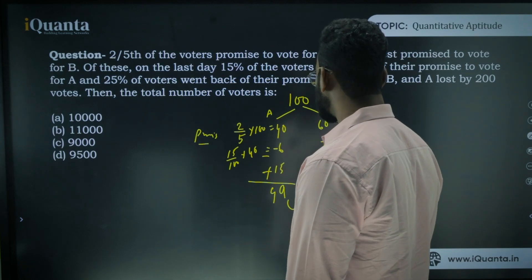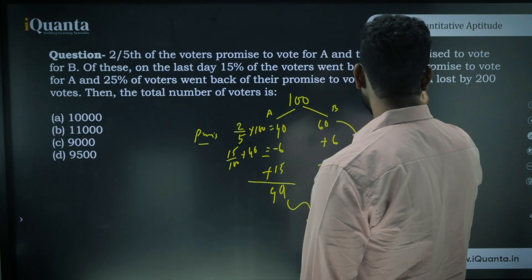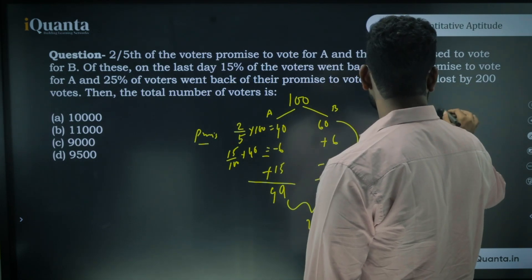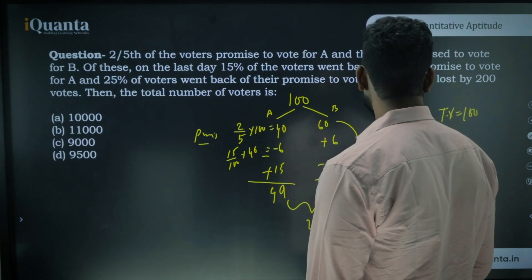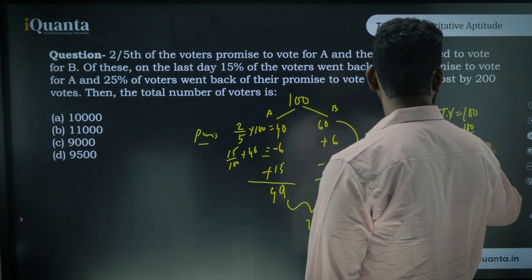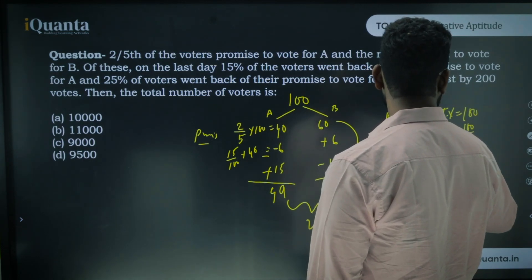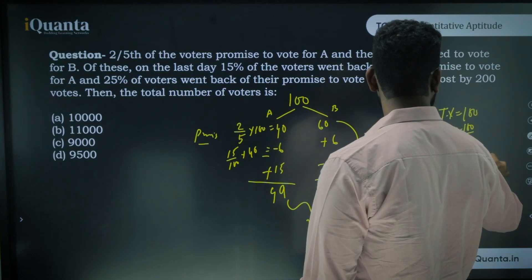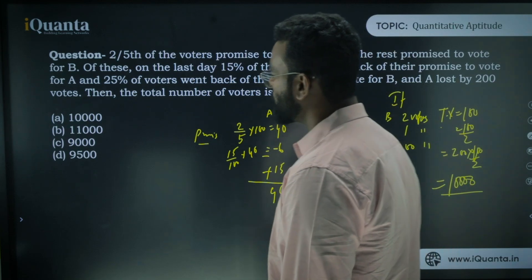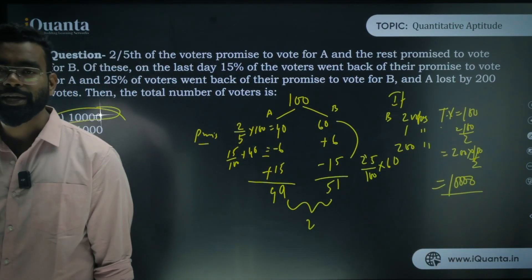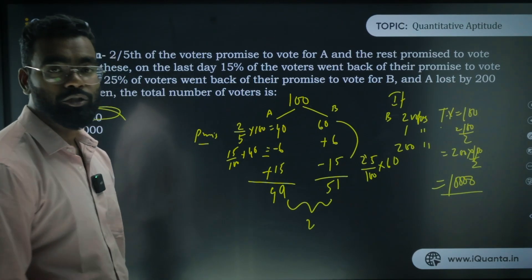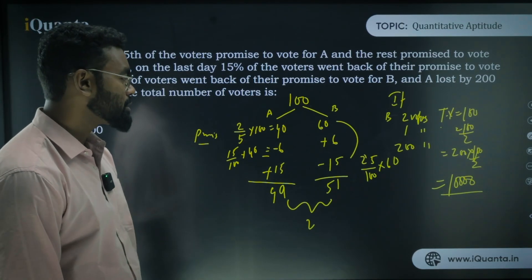B won by 2 votes when total voters = 100. Since B actually won by 200 votes, the total number of voters is 200 × (100/2) = 10,000. So the total number of voters is 10,000. This is how I solve these types of questions — understanding the approach is very important.